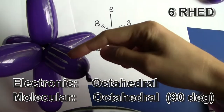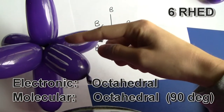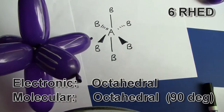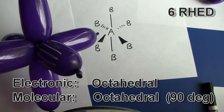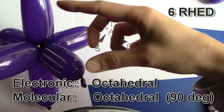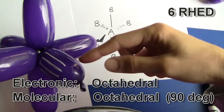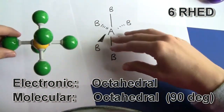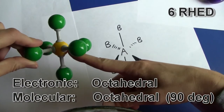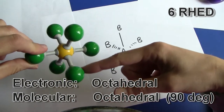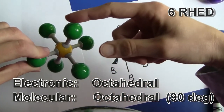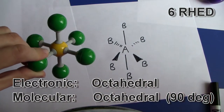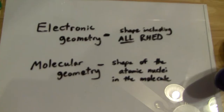If you have six regions of high electron density around a central atom, then you get the octahedral shape, where you have six equally spaced 90 degree angles — easier to see in a model. We have the central atom surrounded by six atoms, giving us the octahedral shape.